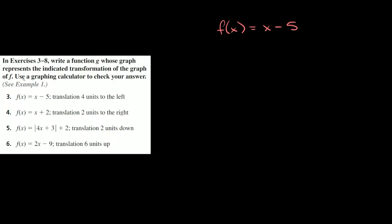So let's start with these right here. The instructions say in exercises three through eight, write a function g whose graph represents the indicated transformation of the graph of f. So it's just basically saying it's going to give us a function f of x, and then we're going to have to translate it, and that new function is called g of x.